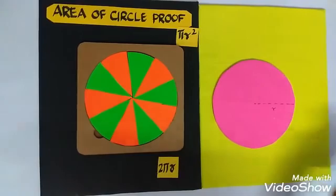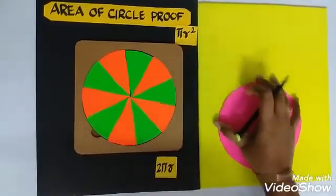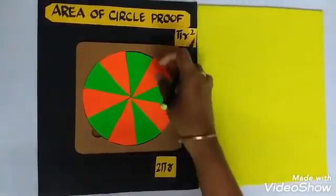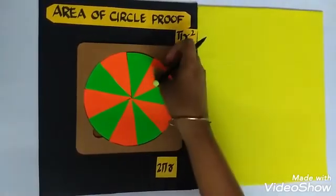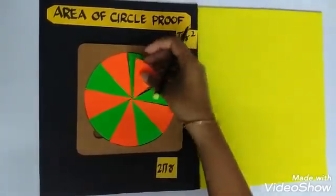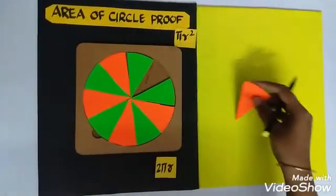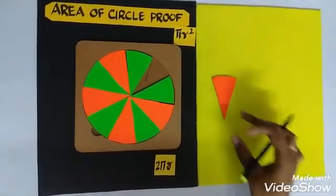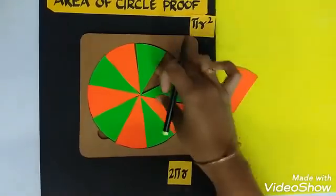The radius is r, right? Now I will take it off. Now I will place these parts into parallelogram shape, like parallelogram shape.